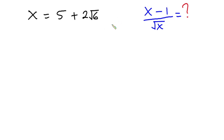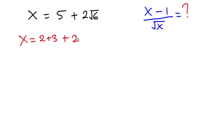Now let's get started. First of all, I'll write x as equal to 5 plus 2√6. I'll rewrite this as 2 plus 3 plus 2 times square root of 2 times square root of 3.